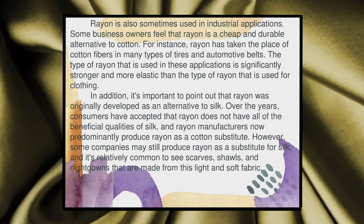Rayon is also sometimes used in industrial applications. Some business owners feel that rayon is a cheap and durable alternative to cotton. For instance, rayon has taken the place of cotton fibres in many types of tyres and automotive belts. The type of rayon used in these applications is significantly stronger and more elastic than the type used for clothing. It is also important to point out that rayon was originally developed as an alternative to silk. Over the years, consumers have accepted that rayon does not have all the beneficial qualities of silk, and rayon manufacturers now predominantly produce rayon as a cotton substitute. However, some companies may still produce rayon as a substitute for silk, and it is relatively common to see scarves, shawls, and nightgowns made out of this fabric.